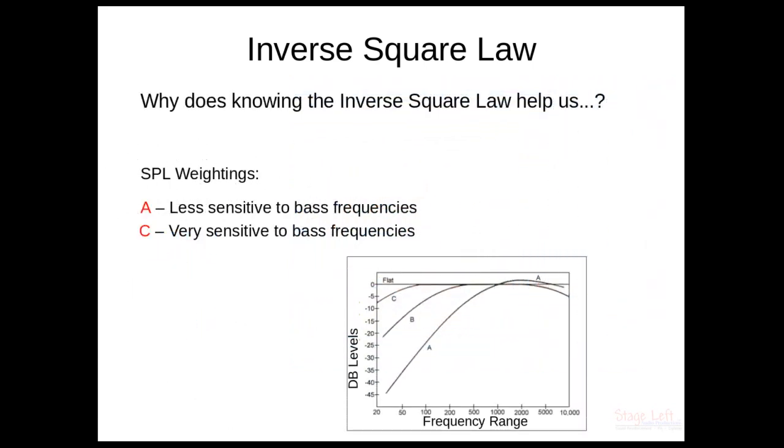So the SPL weightings that I mentioned in one of the previous slides, there's two that are very prominent. There's A weighting and C weighting. And the A weighting is less sensitive to bass frequencies. The C weighting is very sensitive to bass frequencies. So if you look at the chart, you'll see that bottom curved line, letter A—that's an A weighting. Now, if you look at the frequency range, let's say between 50 and 200 hertz, notice how quiet it is if you look at the scale on the left-hand side, the database level scale. It's very quiet.